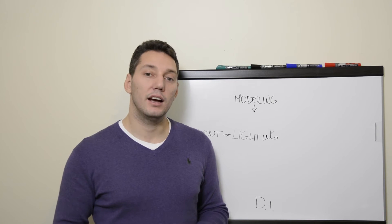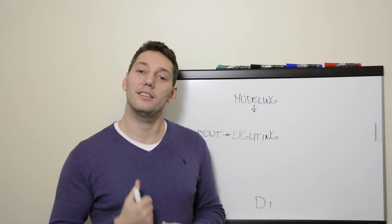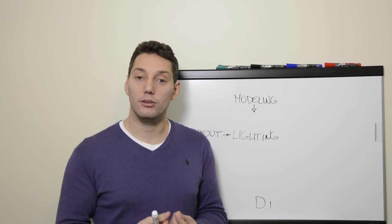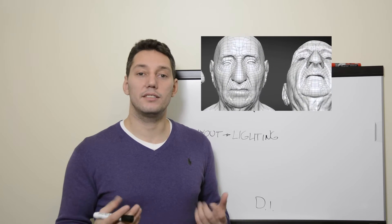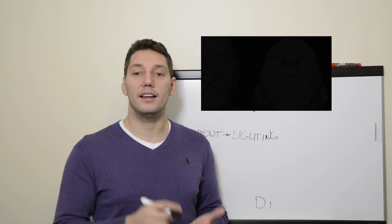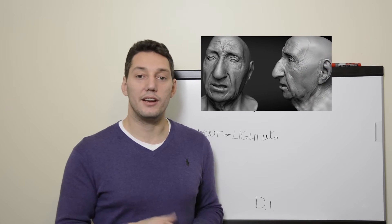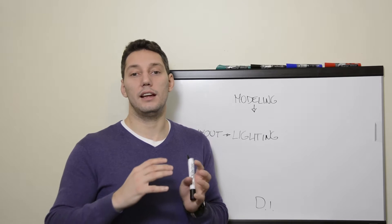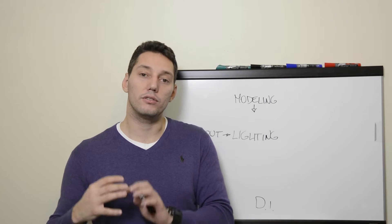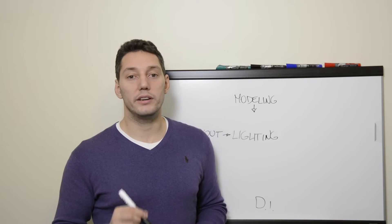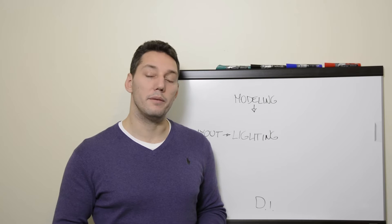Once the model is done, it doesn't have any visual properties — no material look, no color. It's just like a sculpture, like a clay model that is finished but is one color: the clay color. You need to make sure the model is translated into something that looks visually real. That's where the texturing department and the look development department come into play.